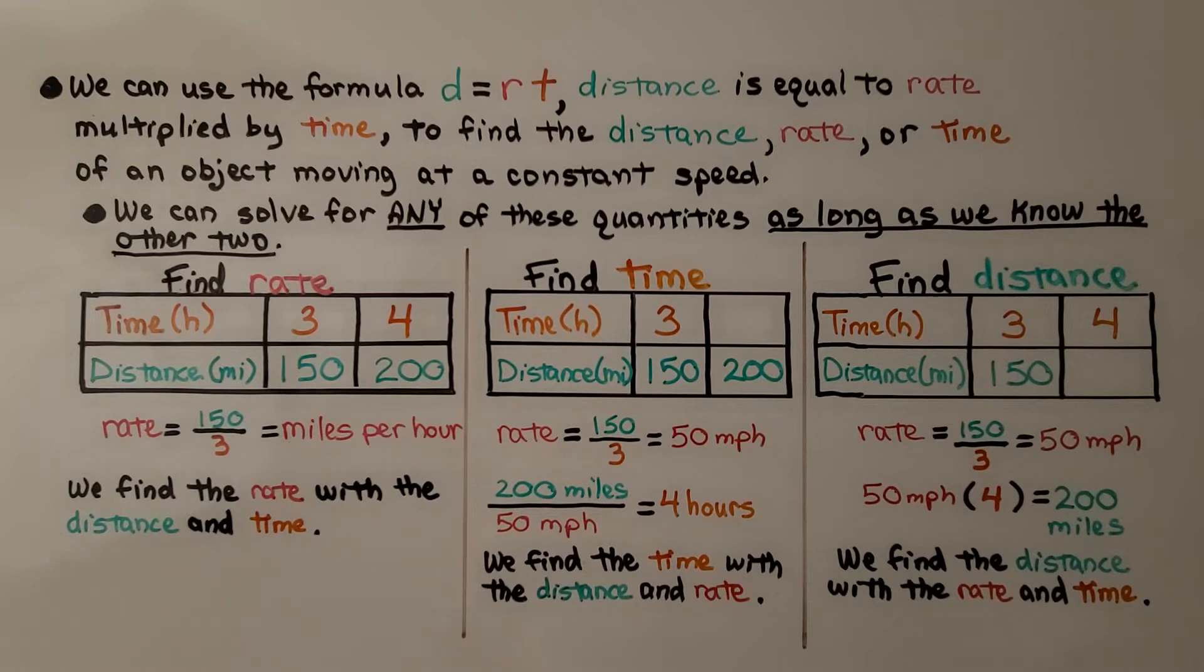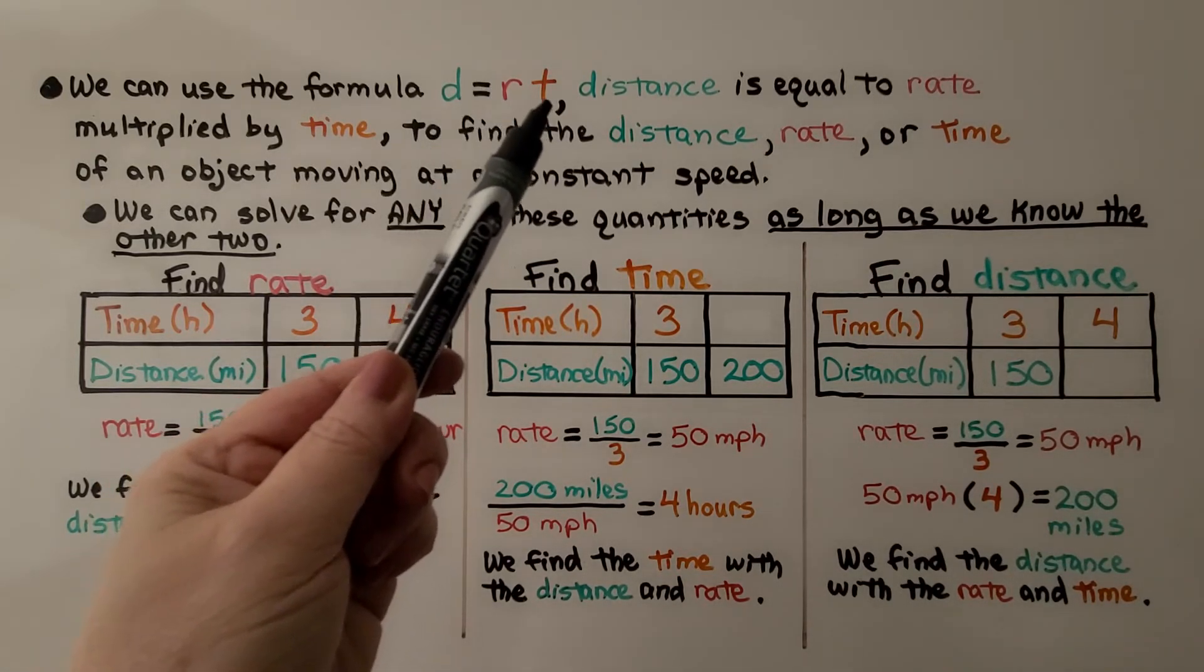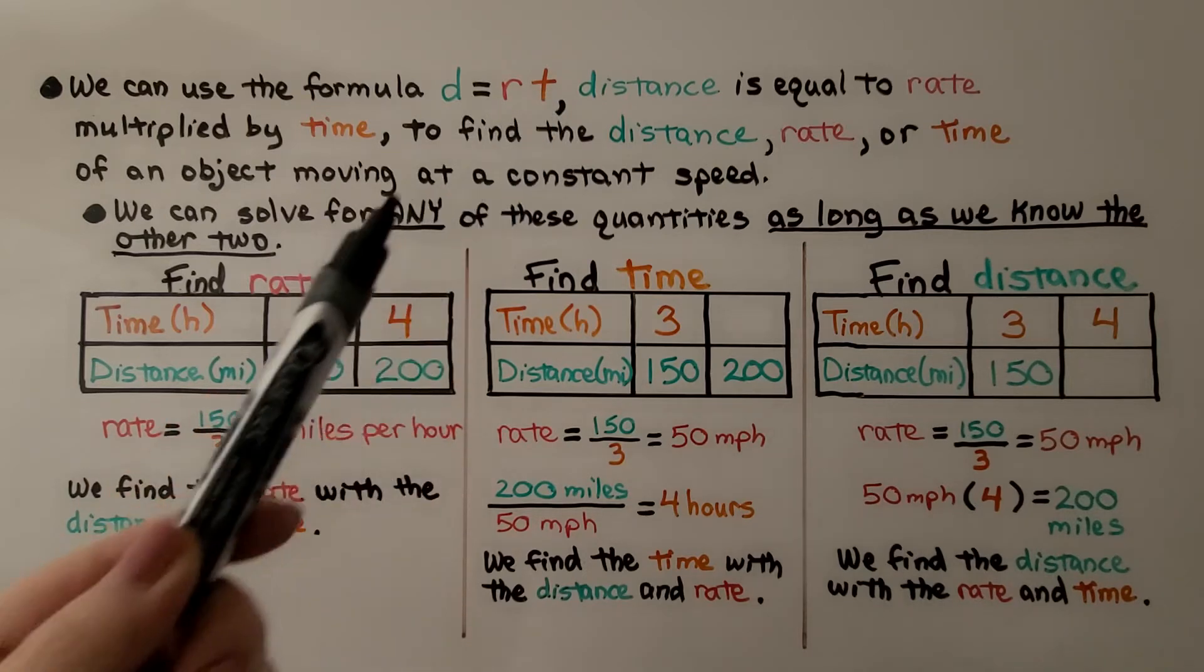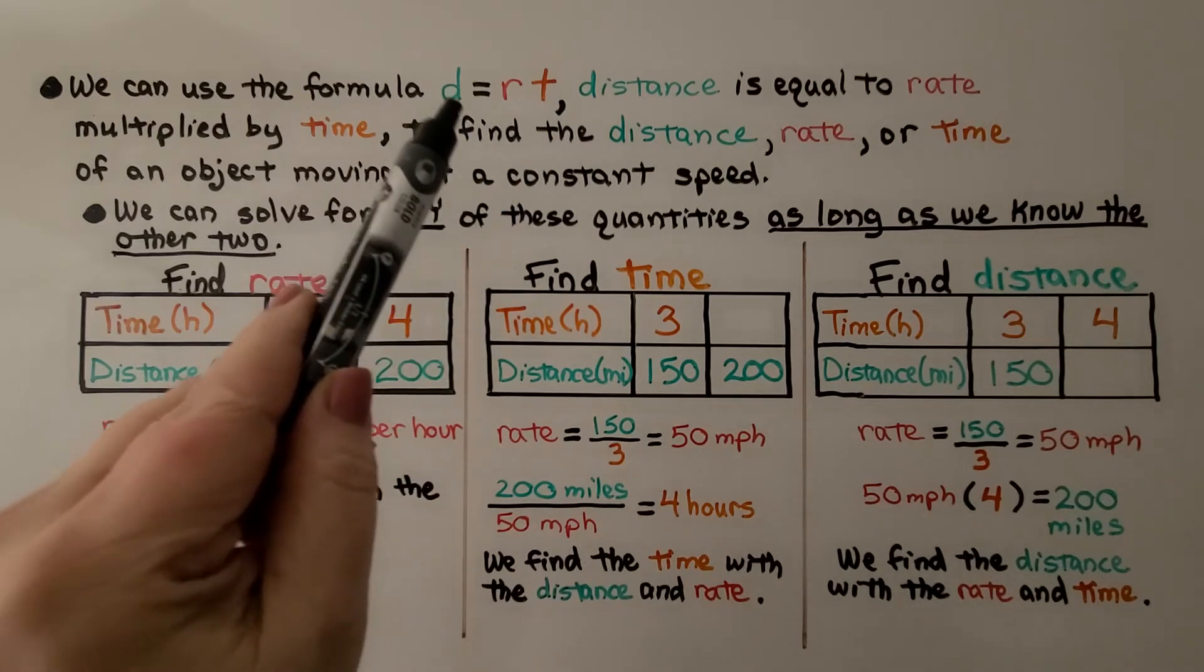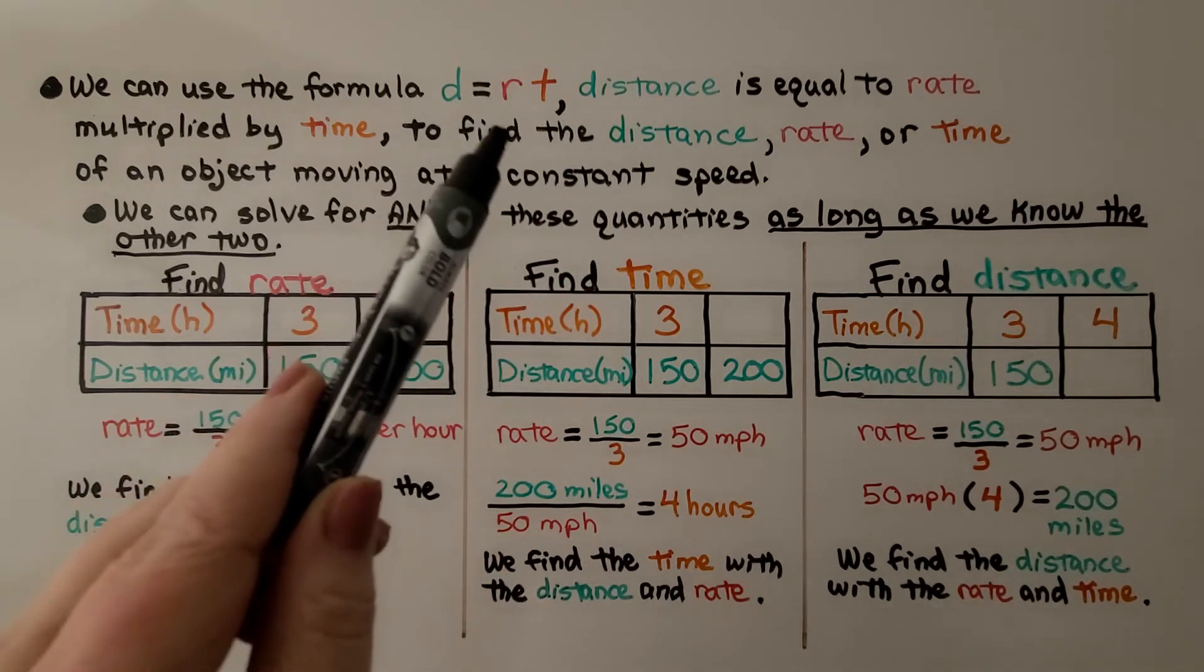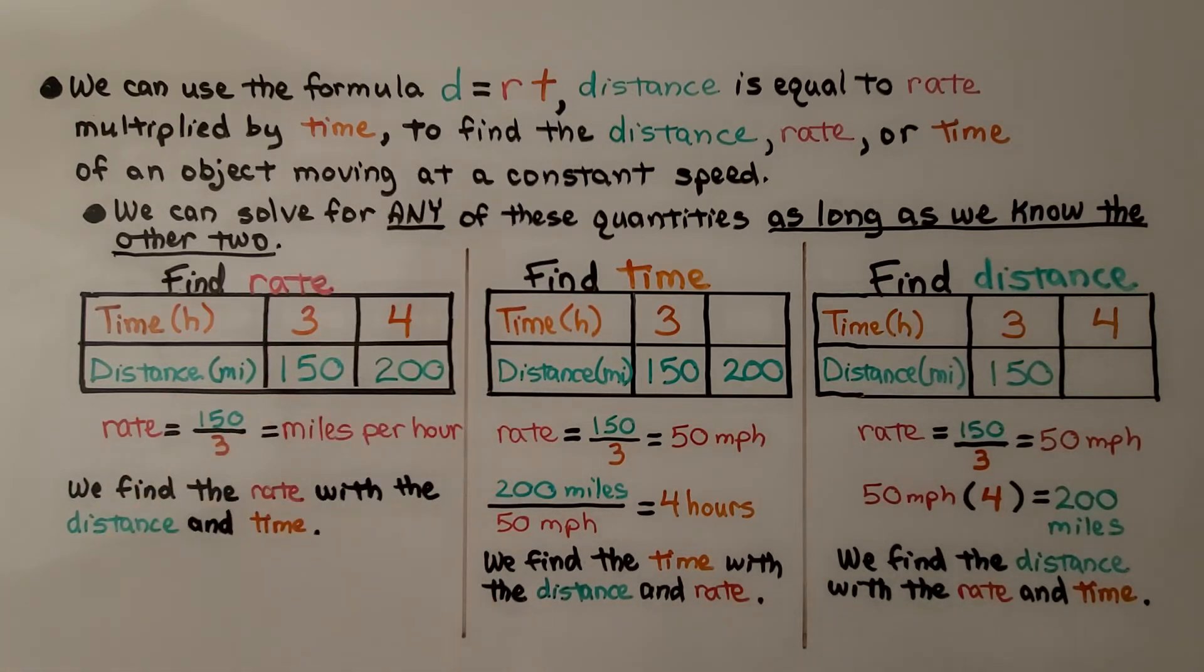We can use the formula D is equal to R times T. Remember when they're next to each other, that means multiply. So we can use this formula, D equals R times T, for distance is equal to rate multiplied by time. To find distance, rate, or time of an object moving at a constant speed. We can solve for any of these quantities, as long as we know the other two.